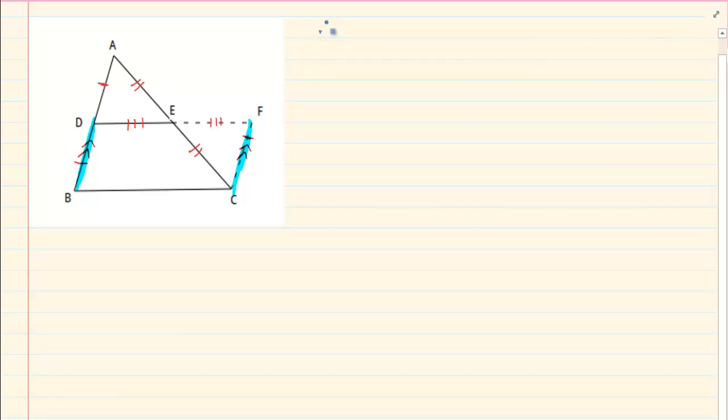So therefore, we can now say that DFBC is a parallelogram. Why? Because one side is parallel and equal. We started off by making parallel and we have just proven that they are equal by congruency.